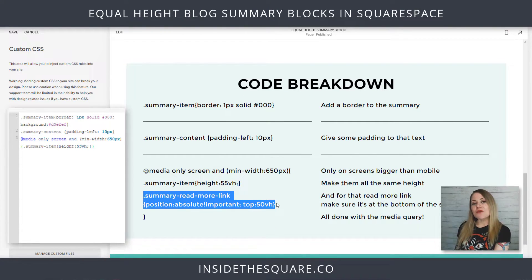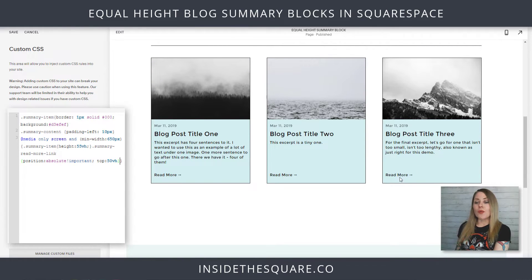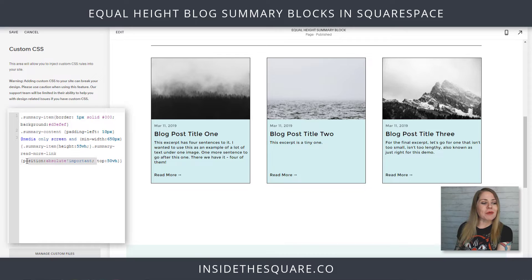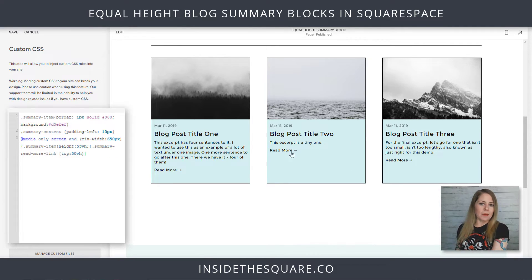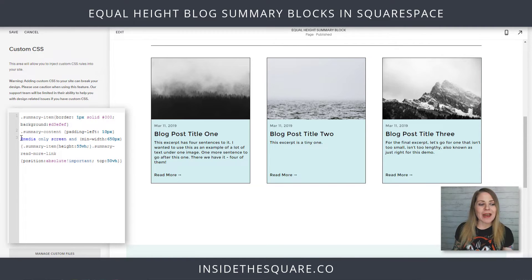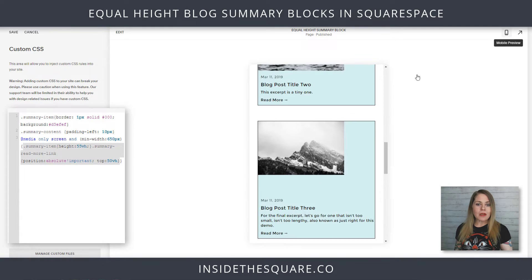Last but not least, I added one more line to move that read more link down to the bottom. I'm going to copy this and paste it before that final bracket so it's still part of this media query. Now our read more button has moved down to the bottom. The position absolute makes sure it's in a relative position to the other content inside that summary block, so I can add a little bit of top spacing for it. If we remove the position line, it's not going to have anything to compare it to, but with position absolute it lets me put it at the exact same spot in every single summary item. And since it's inside the media query, when we go to mobile the read more button stays exactly where it's supposed to in relation to that blog summary excerpt.